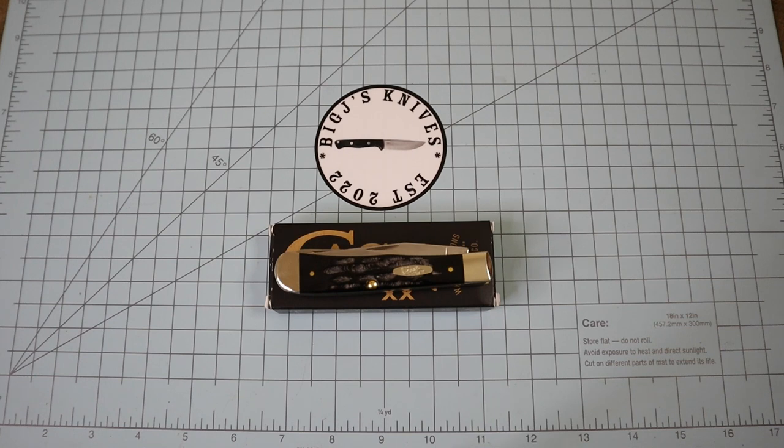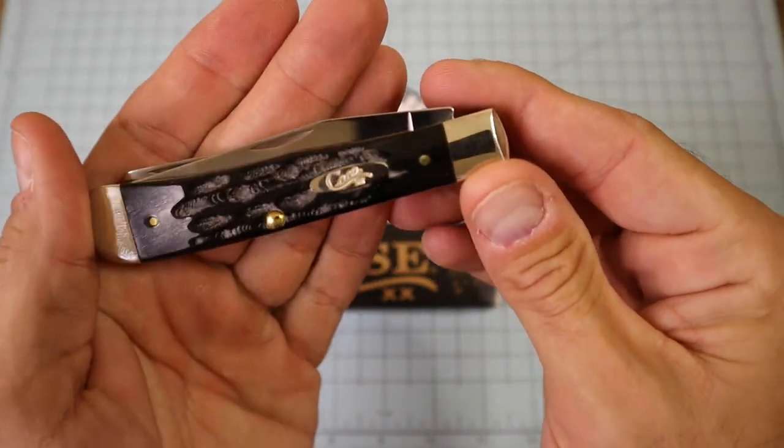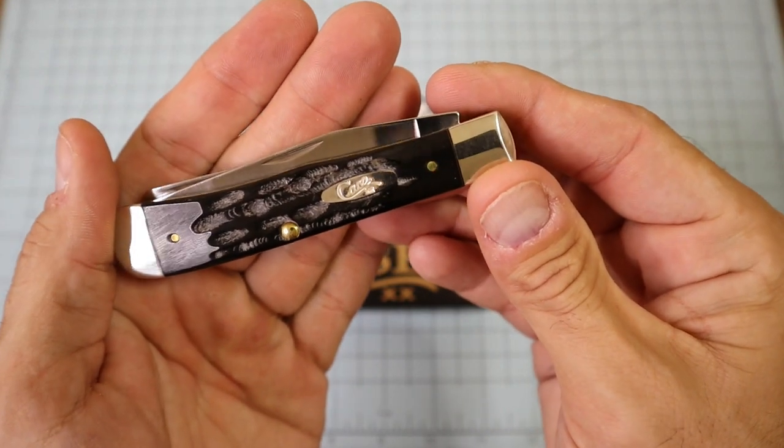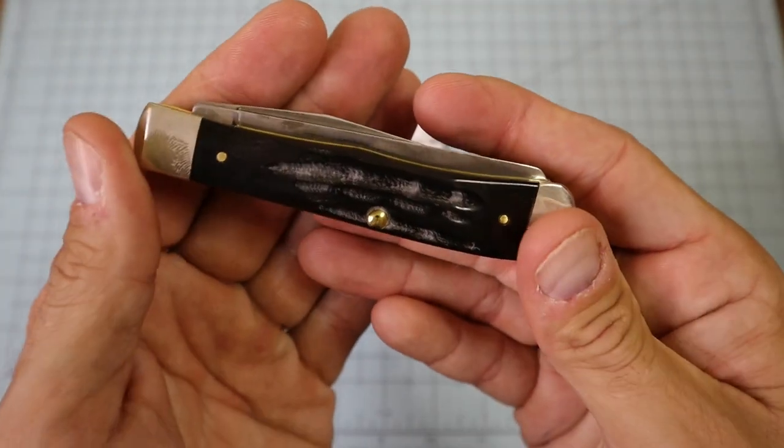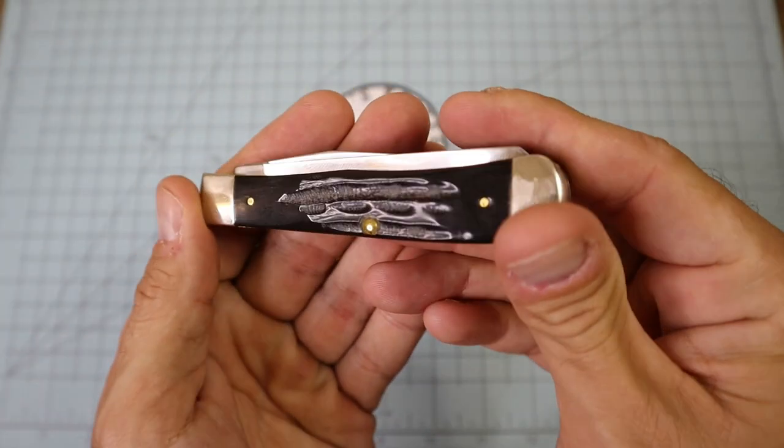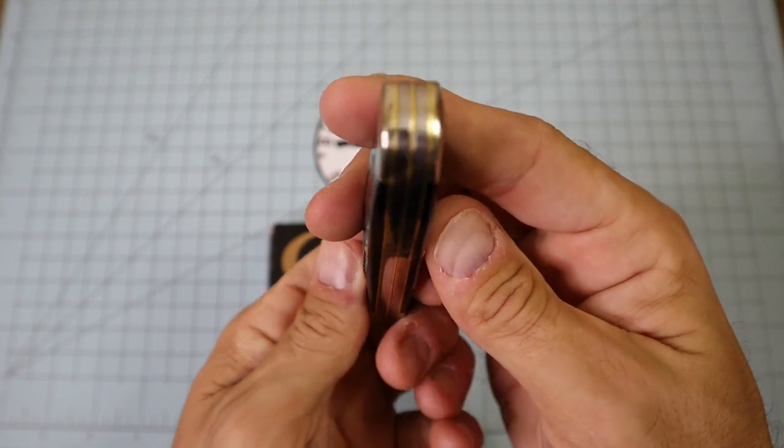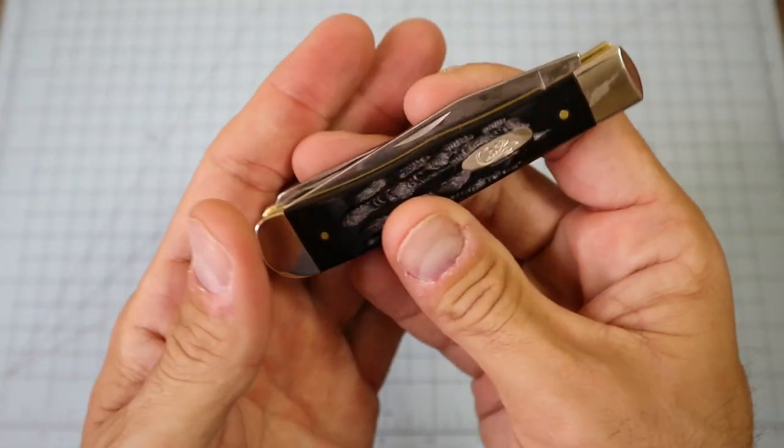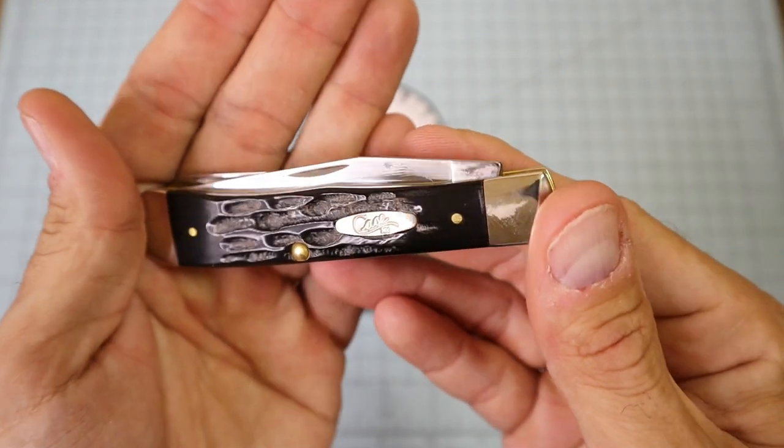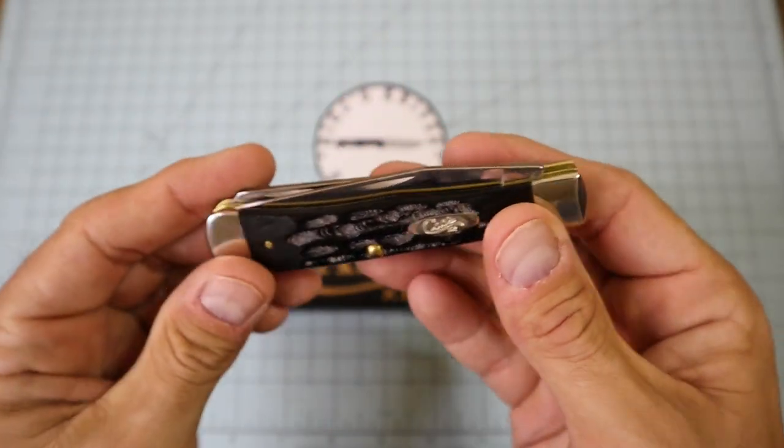This past week I ordered a couple of knives online, then bought two knives at the flea market. This is one I got at the flea market. I didn't know Lee was going to have these, but look at this - we got us a buffalo horn full-size trapper. I've never even held one of these, so I was pretty surprised when he said he got some buffalo horn knives over there brand new.